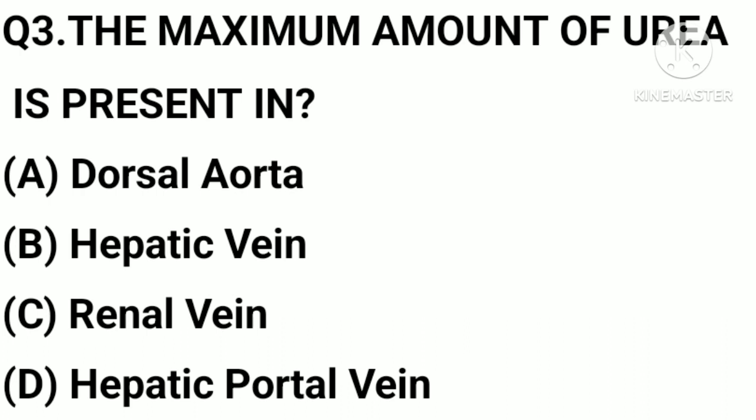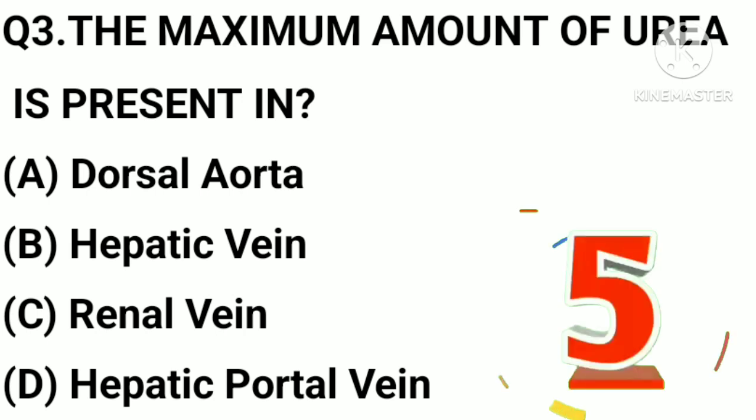The maximum amount of urea is present in: A, dorsal aorta; B, hepatic vein; C, renal vein; D, hepatic portal vein.